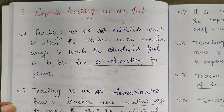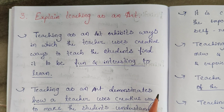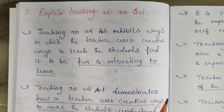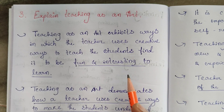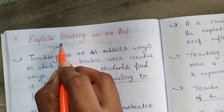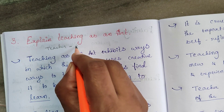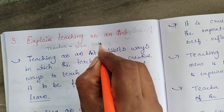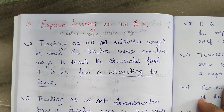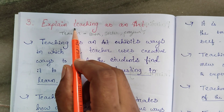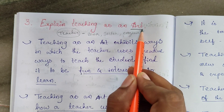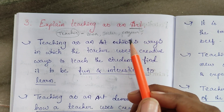Now we will do Question Number 3: explain teaching as an art. Teaching is an art — it is a kala. You know the teacher makes all other professions possible. A teacher produces bank managers, doctors, engineers, IES officers — every profession comes from a teacher.